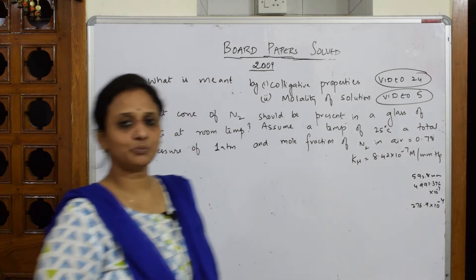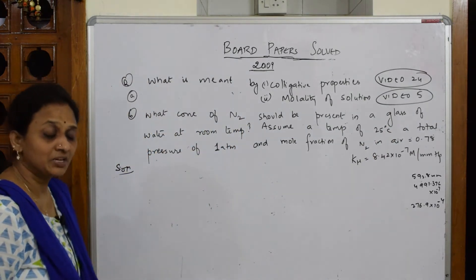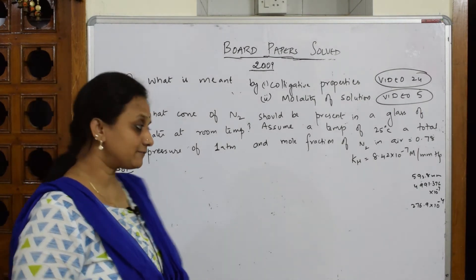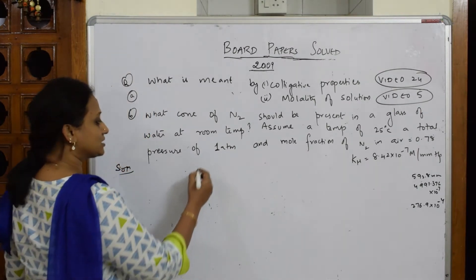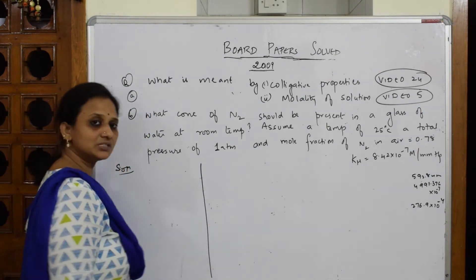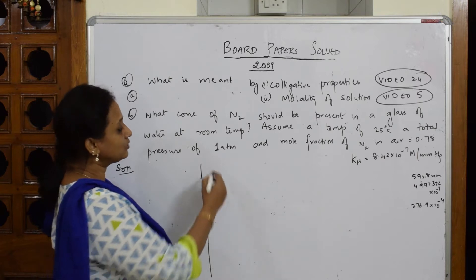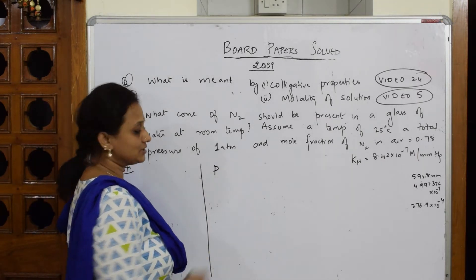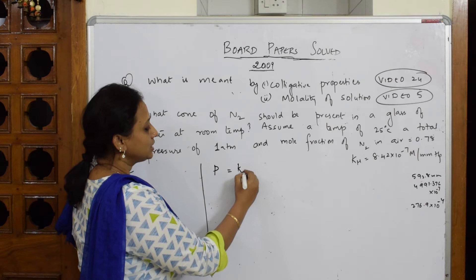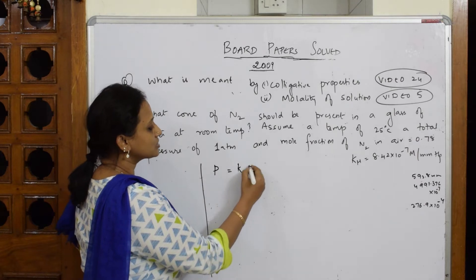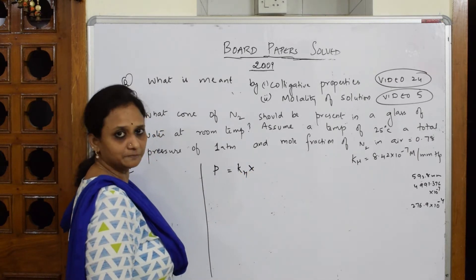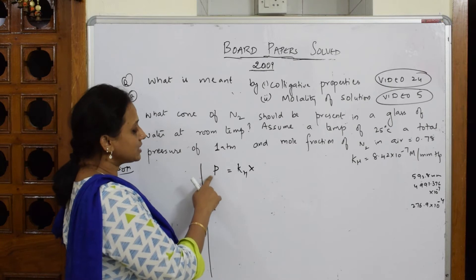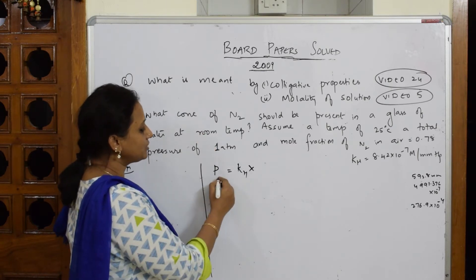They have directly given us that mole fraction X = 0.78, and KH is also given. So when KH is given, what relation should you write? You have to first write the formula with Henry's constant. We very well know the partial pressure exerted by the gas in solution is directly proportional to Henry's constant multiplied by its mole fraction. We are studying this for nitrogen.